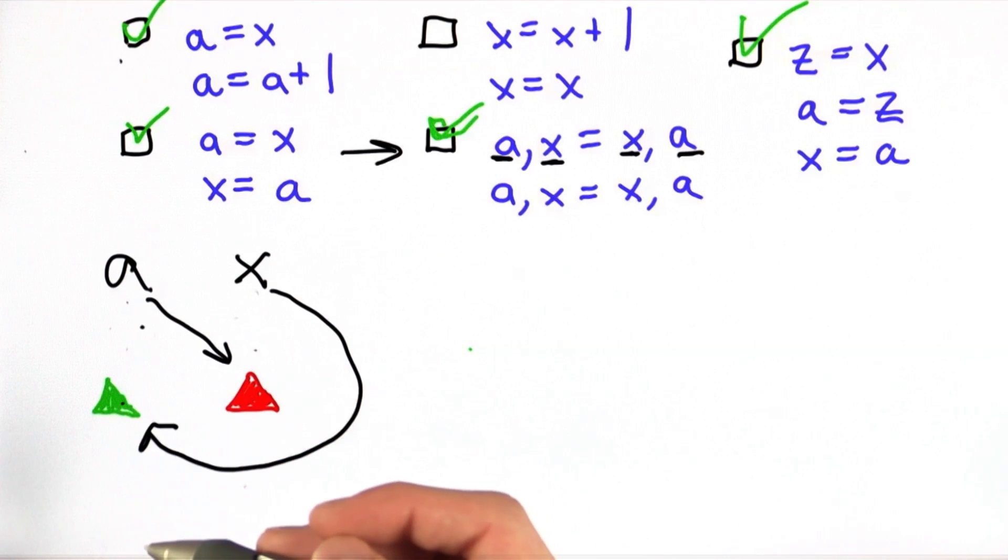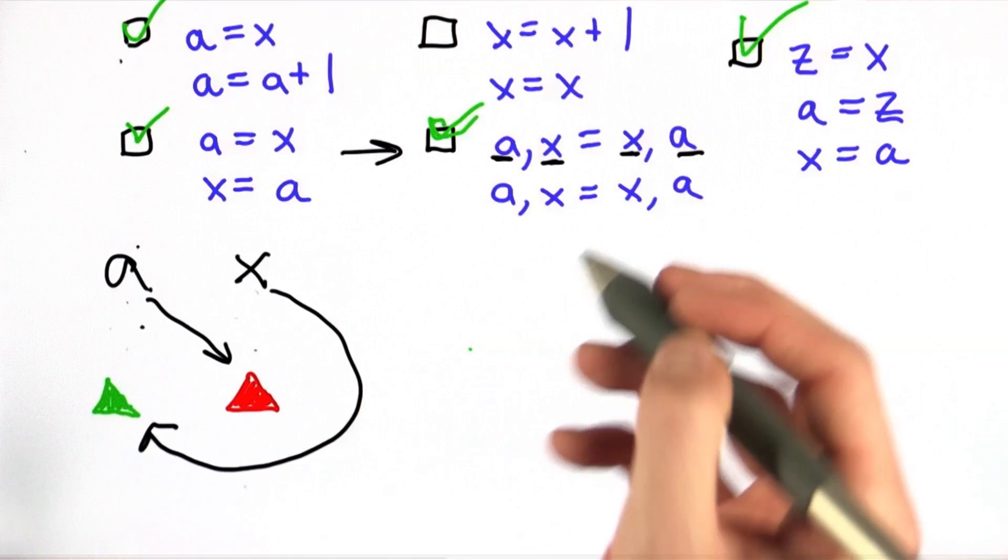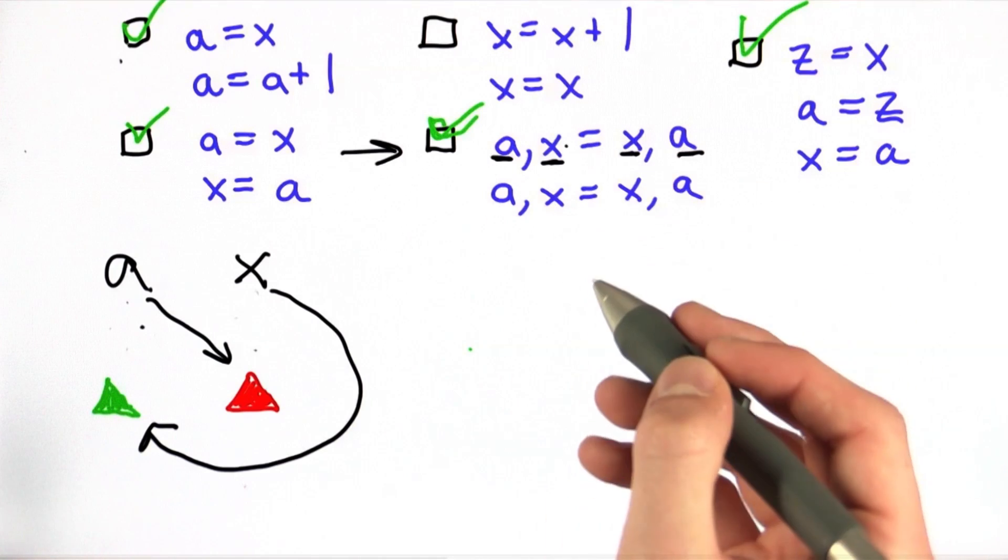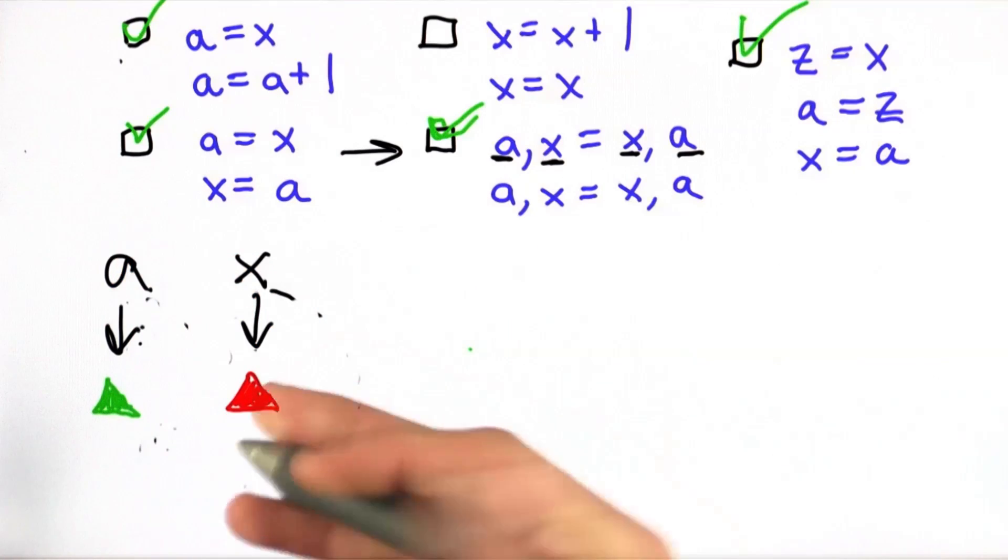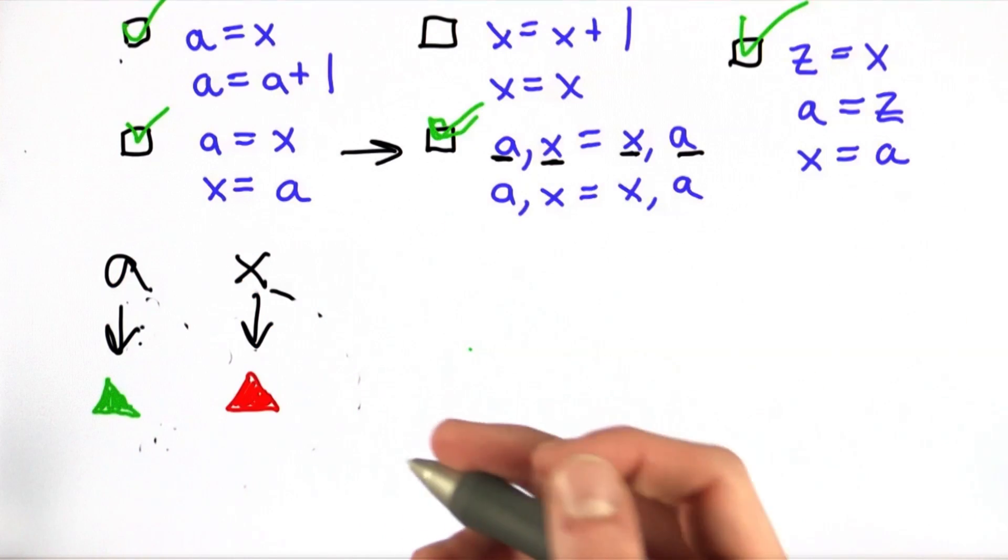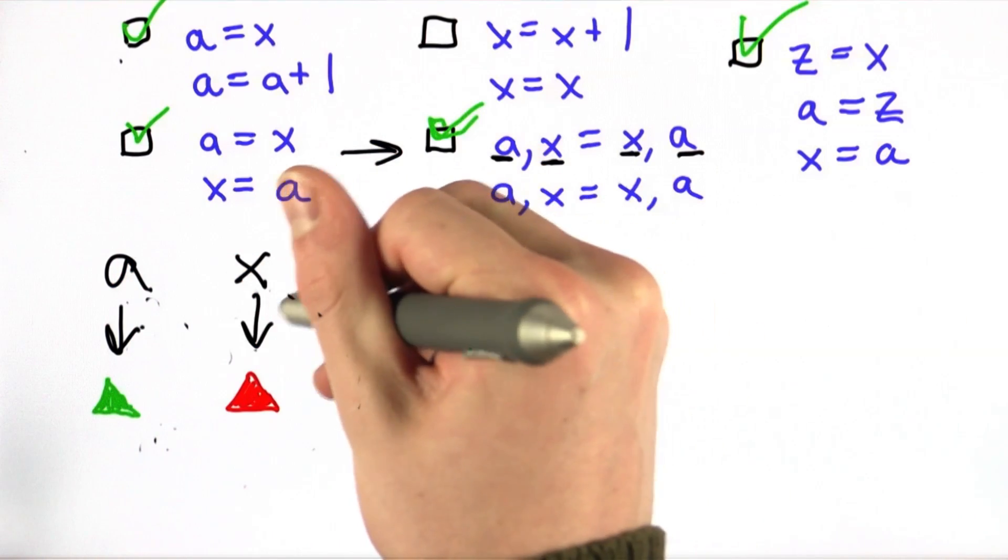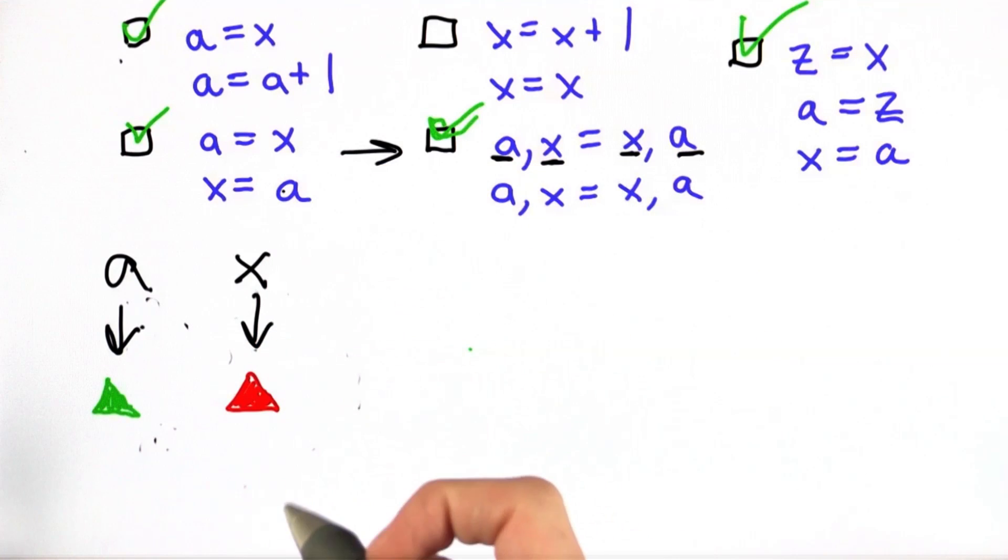The second line of code is exactly the same as the first. It's going to swap them again. And if you swap two things twice, you get what you had before. So since X refers to the red triangle still, it's a correct choice.